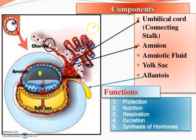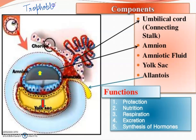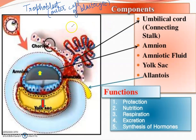We are going to start this topic here. The peripheral cells or the outermost cells of the blastocyst are called trophoblast. This is the outermost or outer cell of blastocyst. This is how we call trophoblast or trophectoderm.